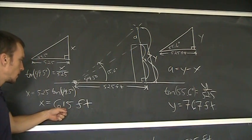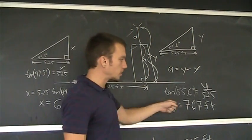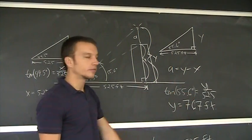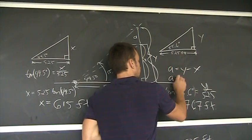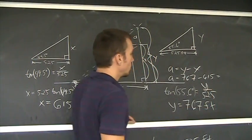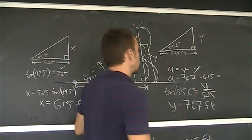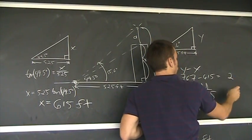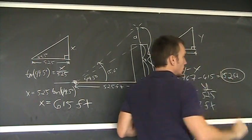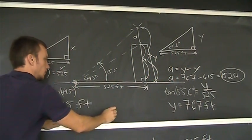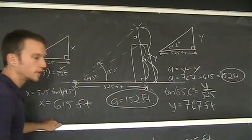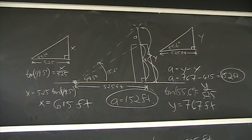So the distance of the building is 615 feet. The distance of the building plus the antenna is 767 feet. So to get the antenna I subtract one from the other. So the antenna is going to be 767 minus 615, which should give you an answer of 152 feet.